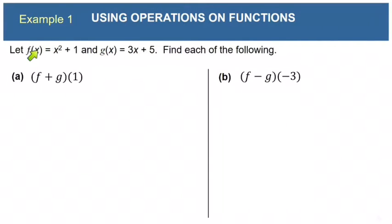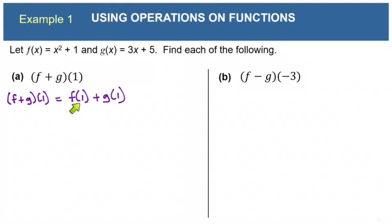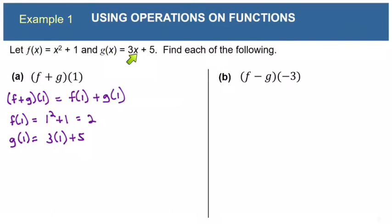Here's an example. Let f(x) equal x² + 1 and g(x) equal 3x + 5. First, let's find f+g of 1. From our definition of sum, f+g of 1 is f(1) plus g(1). f(1) is 1² + 1, which is 1 + 1 = 2. g(1) is 3×1 + 5, which is 3 + 5 = 8. Adding f(1) + g(1) gives 2 + 8 = 10. So f+g of 1 is 10.